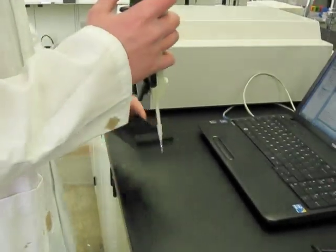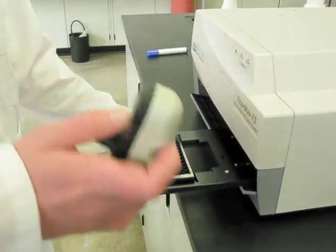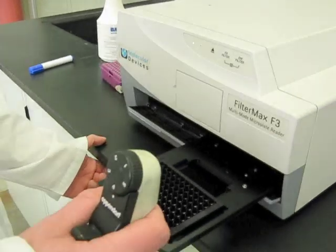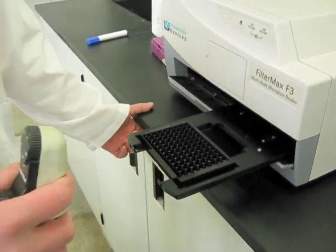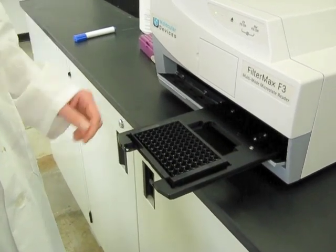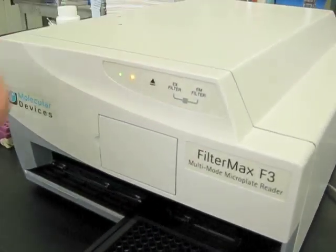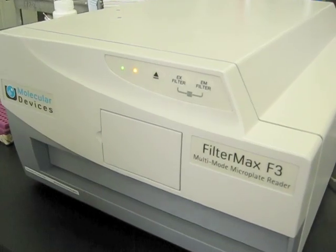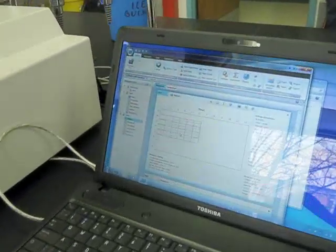We're going to add 160 microliters of the thiol dilution into each well, in duplicate. We're going to place it into the plate reader, and quickly, we're going to add 40 microliters of the di-eosin glutathione disulfide solution into each well. We're going to close the plate reader quickly and press read.